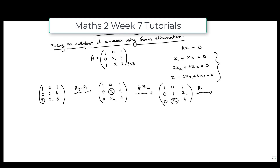We perform R3 minus 2R2. This gives us the matrix [1, 0, 1; 0, 1, 2; 0, 0, 0]. We can see that the last row has become all zeros, and this is already in reduced row echelon form.